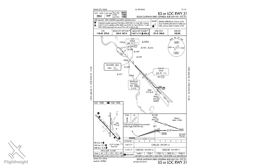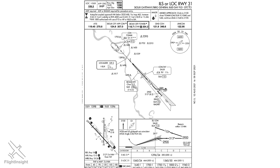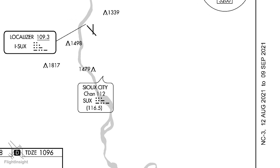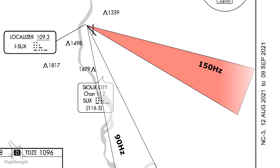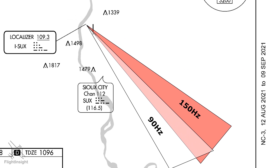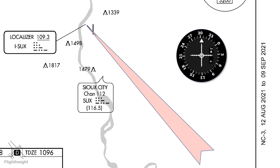A main component of an ILS approach is the localizer transmission, which provides lateral guidance to the runway. It does this with a pair of highly directional radio transmissions, one at 90 Hz, the other at 150 Hz. Where the two signals overlap, an aircraft with the proper receiver will have indications showing on the extended centerline of the runway, as this VOR receiver does by having the vertical needle centered.